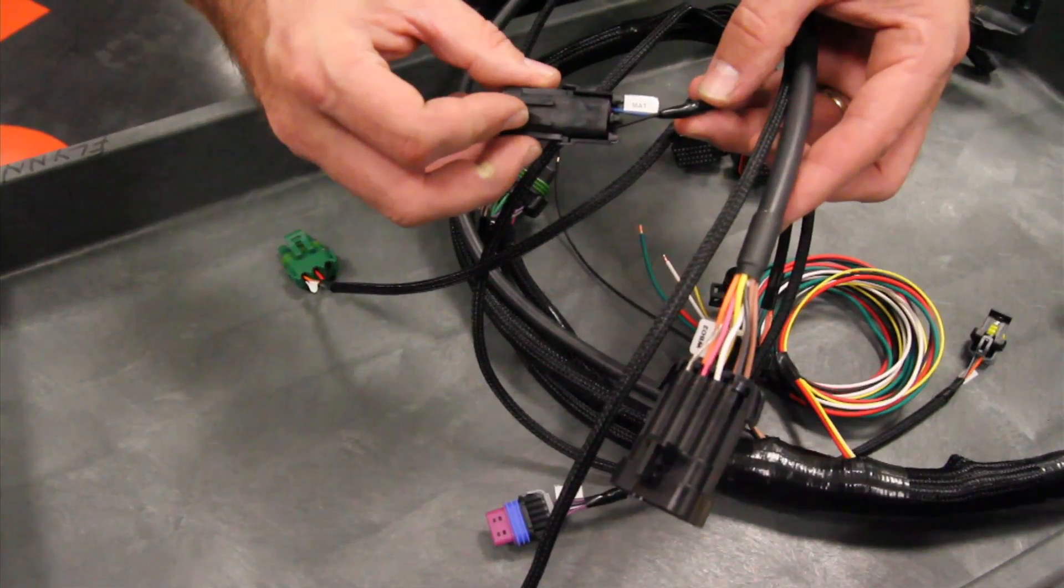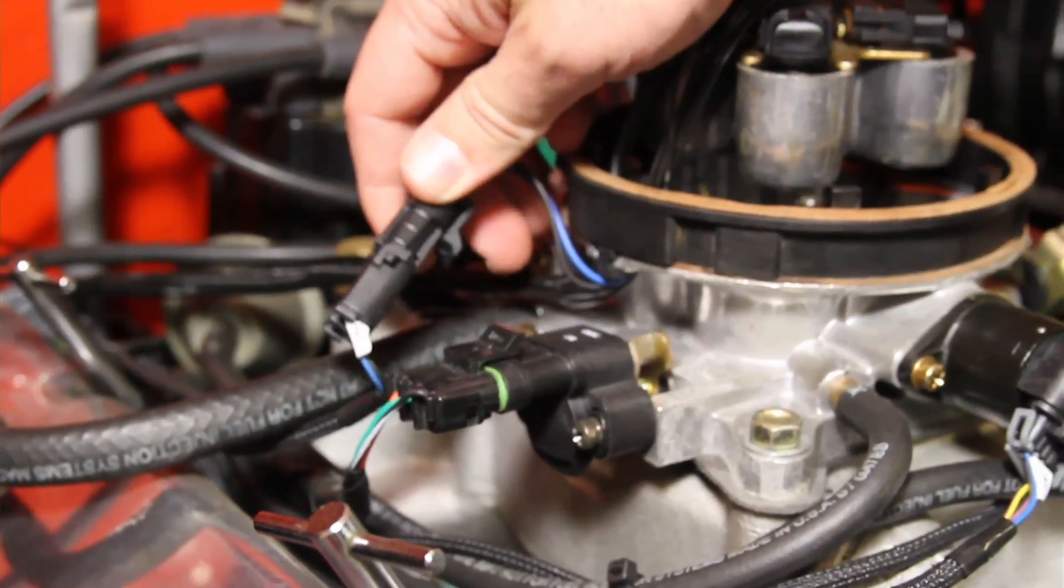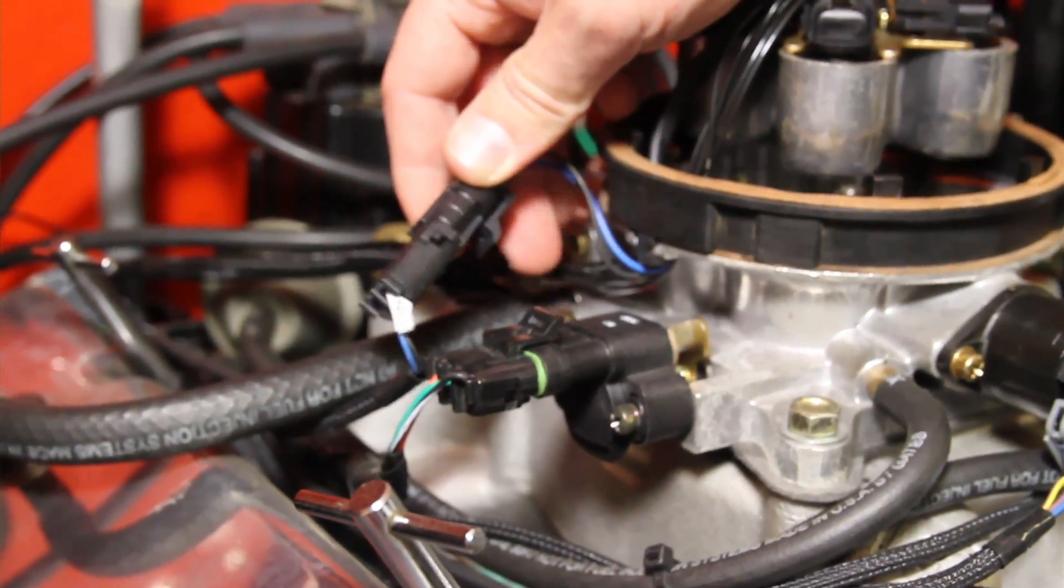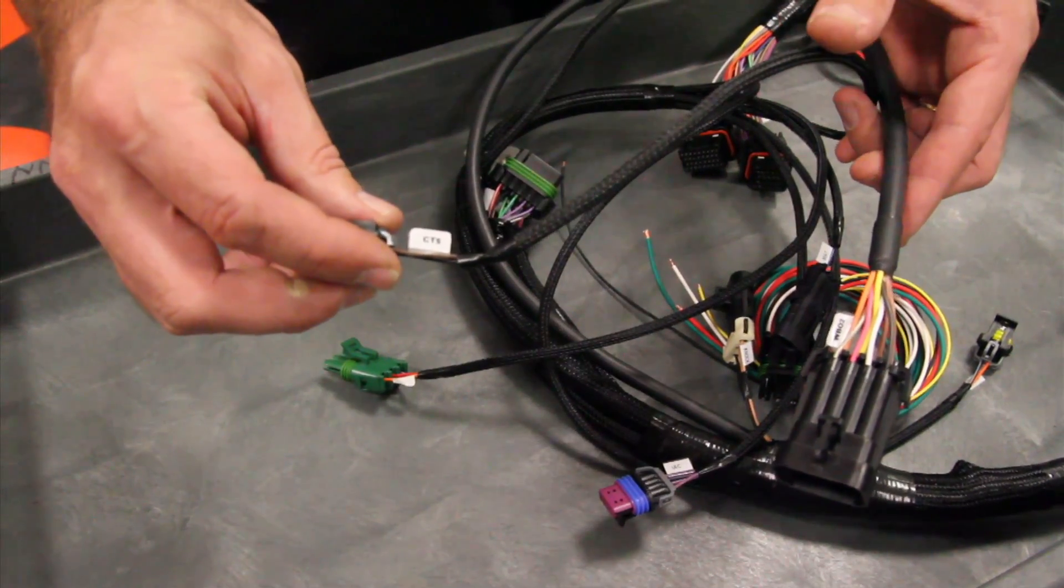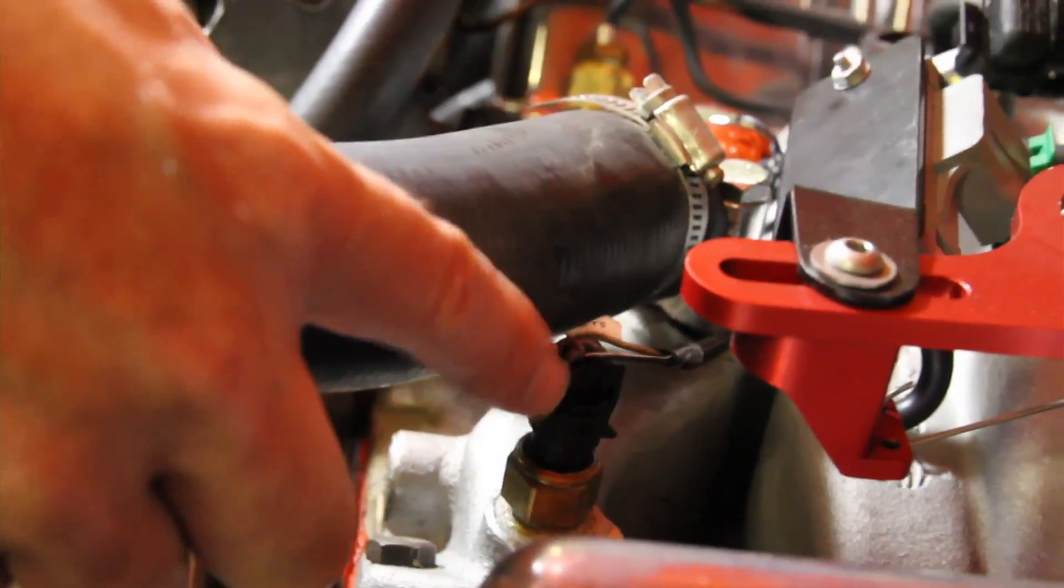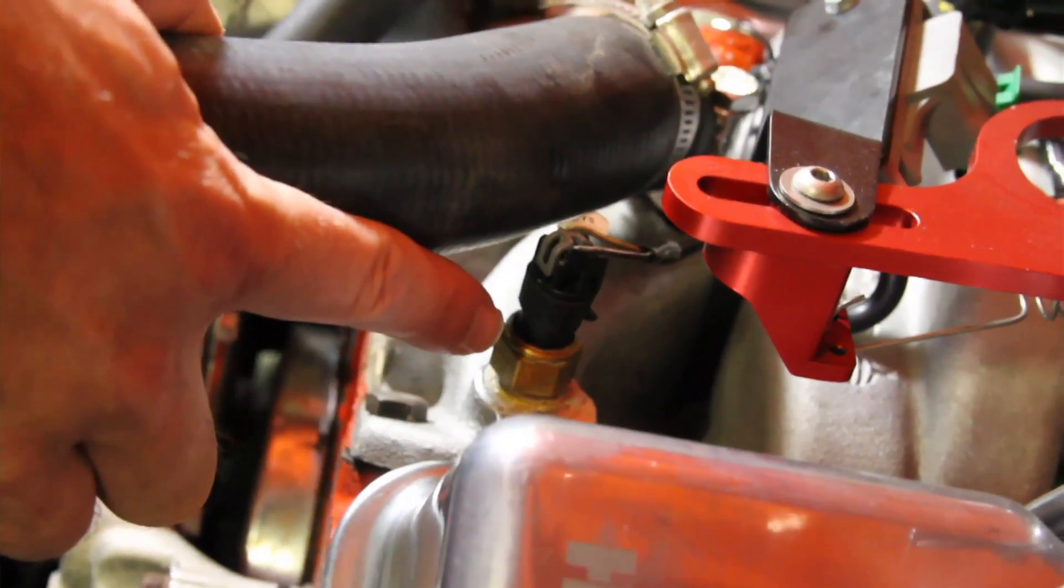This is labeled MAT for manifold air temperature. It plugs into the manifold air temperature sensor. This is labeled CTS for coolant temperature sensor. It plugs into the engine coolant temperature sensor.